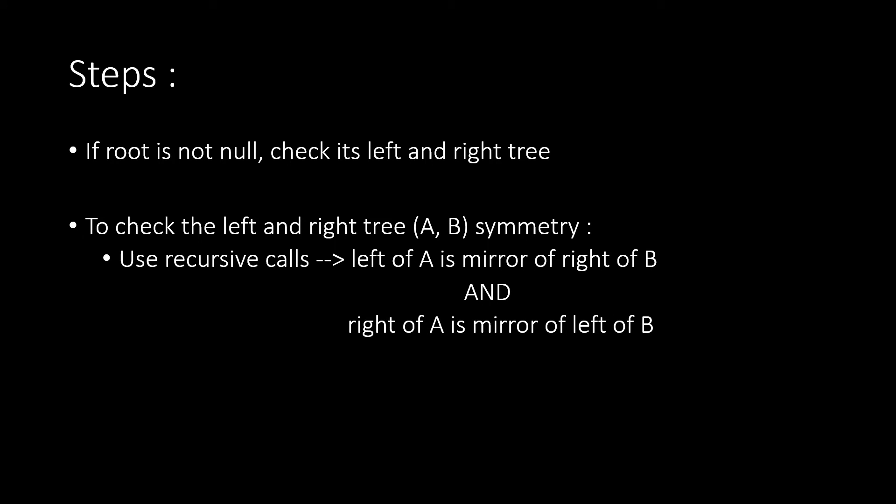Let's quickly recap what we saw. Firstly, if the root is null, we stop or else we need to check if its left and right are symmetric. To check its symmetry, we need to take tree A and B and recursively check if left of A is mirror of right of B and right of A is mirror of left of B.